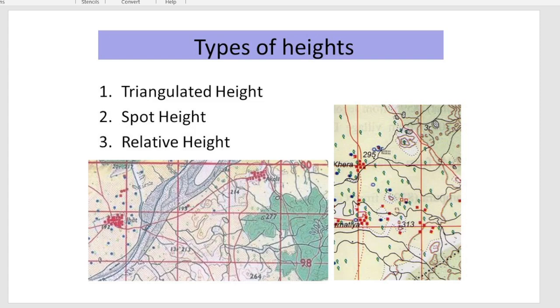In our topographical map, the types of heights that are used are number one, triangulated height; number two, spot height; number three, relative height. Now this relative height can also be termed as relative depth. This depth is when we calculate the depth of a well.